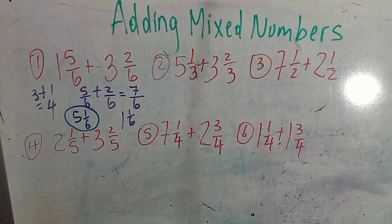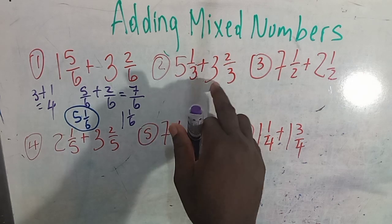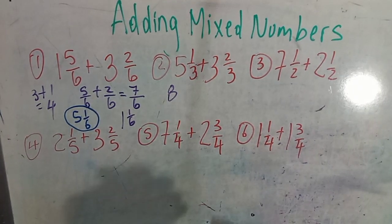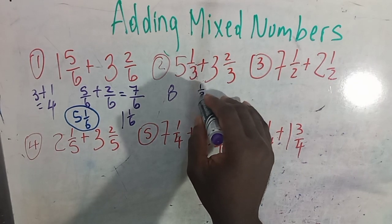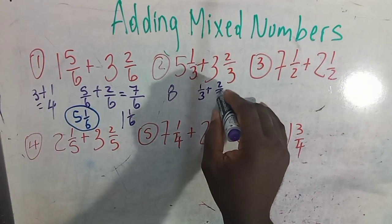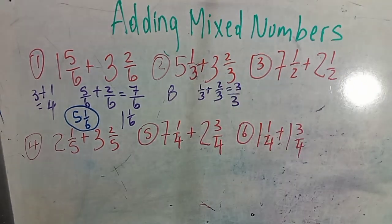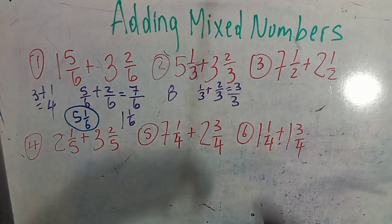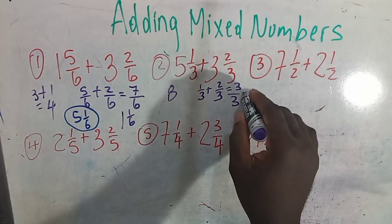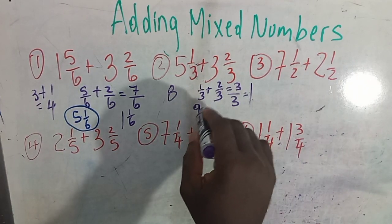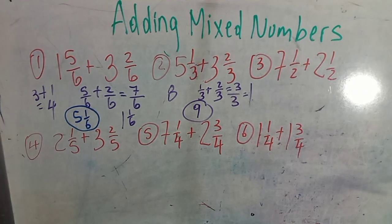Same principle applies. 5 and 3 give you 8. Then you deal with the fraction: 1 over 3 plus 2 over 3 equals 3 over 3. A number over itself is equal to 1 — a whole. 3 into 3 gives you 1, so 8 plus 1 is going to give you 9. That is your answer.